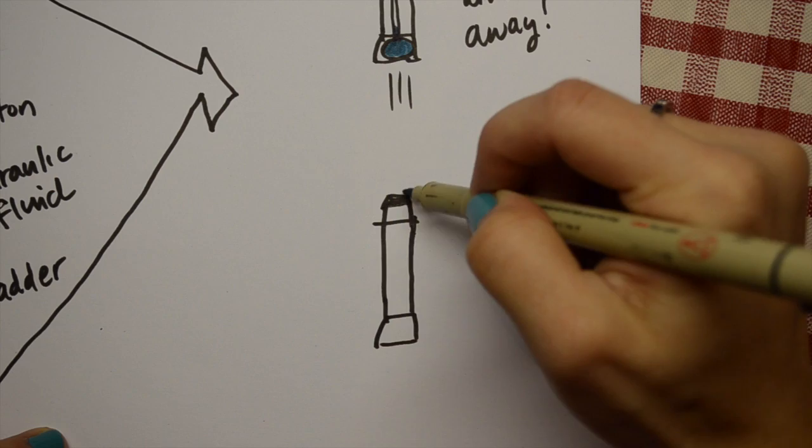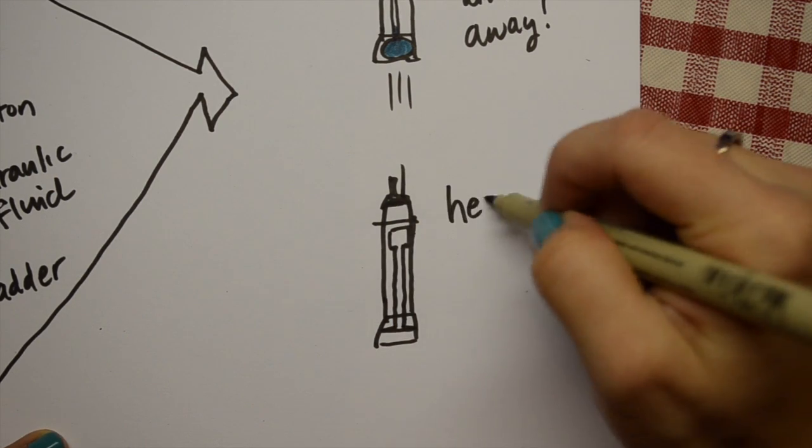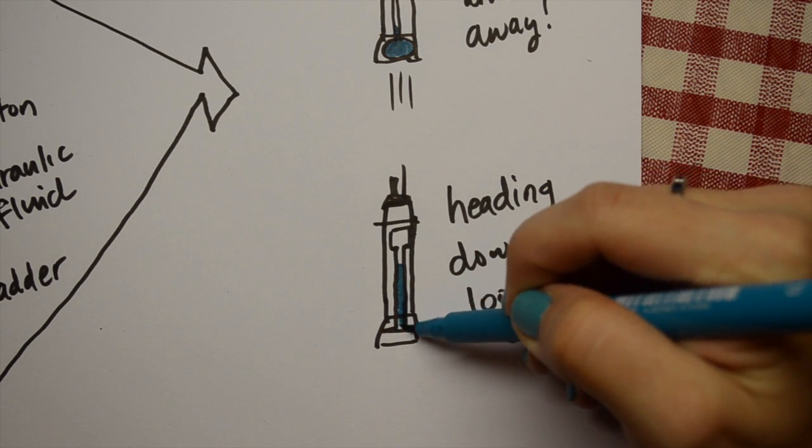The opposite happens when the float needs to sink. The oil from the bladder is sucked back into the float body and it sinks down.